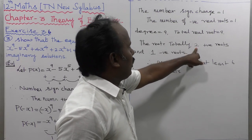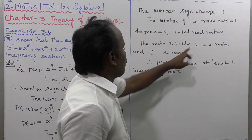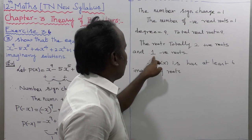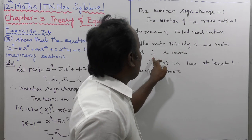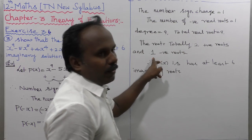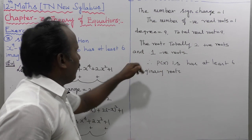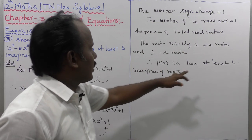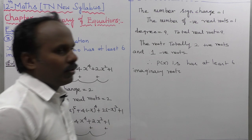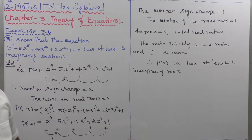Because we have 1 negative root, 2 positive roots — that is 3 real roots in total. The remaining 6 roots are imaginary. That's all. Thank you.